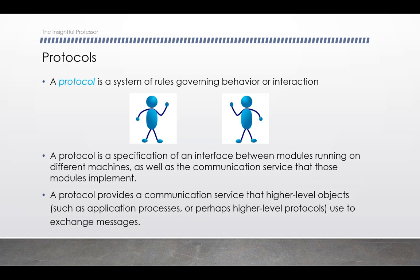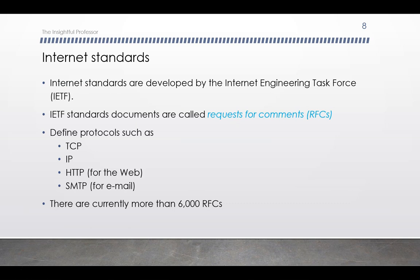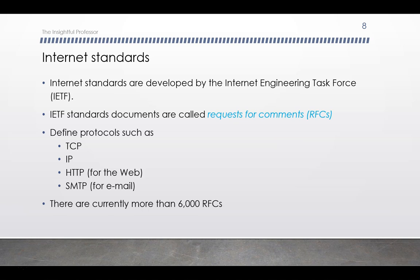This is where standards come into play. Internet standards are developed by the Internet Engineering Task Force, or IETF. The IETF standards documents are called Request for Comments, or RFCs. RFCs started out as general requests for comments to resolve network and protocol design problems that faced the precursor to the internet. RFCs tend to be quite technical and detailed, are available online, and are numbered in chronological order of creation. They serve to define protocols such as TCP, IP, HTTP, and SMTP. There are currently more than 6,000 RFCs.